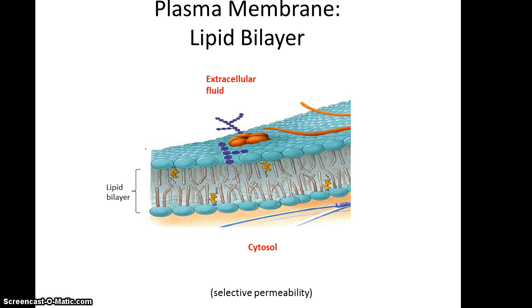This structure, the lipid bilayer, allows for selective permeability, so some things can pass through the membrane while other things cannot.